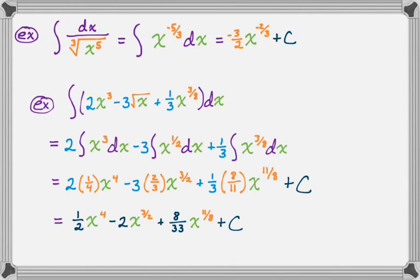So that is how we reverse the power rule. It's really useful to rewrite radicals as rational exponents. If there's a constant multiple, just factor it out right away and deal with it later. I hope you found this helpful, and good luck!